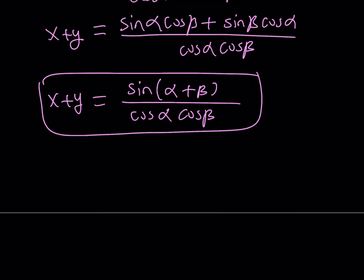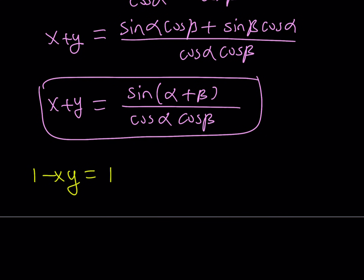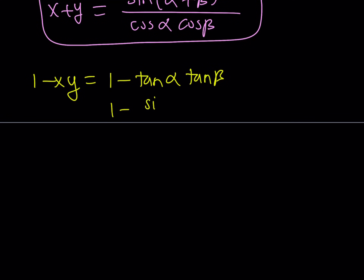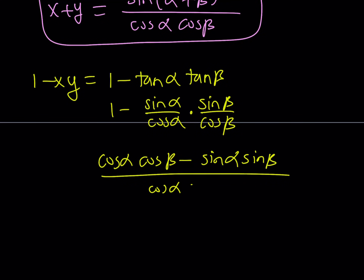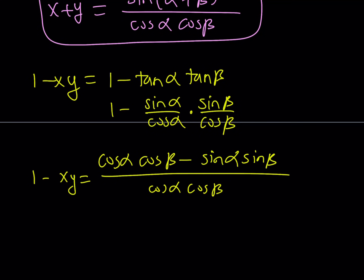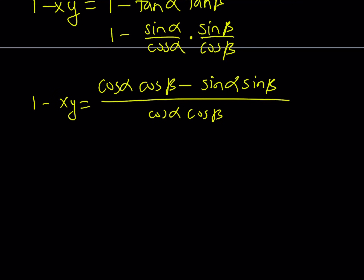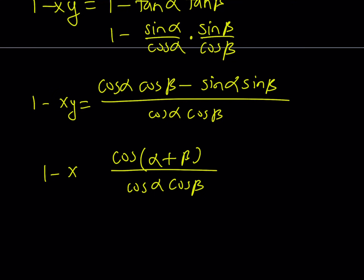Now let's find out what 1 minus xy is going to look like. Replacing x with tangent alpha and y with tangent beta and using sine over cosine, making a common denominator and multiplying across, we get cosine alpha cosine beta minus sine alpha sine beta, divided by cosine alpha times cosine beta. If you look at the numerator, this can be written as cosine of alpha plus beta. So 1 minus xy equals cosine(α+β) divided by cosine alpha cosine beta.